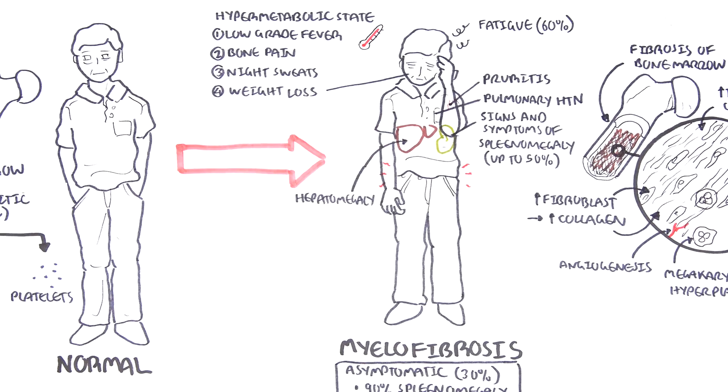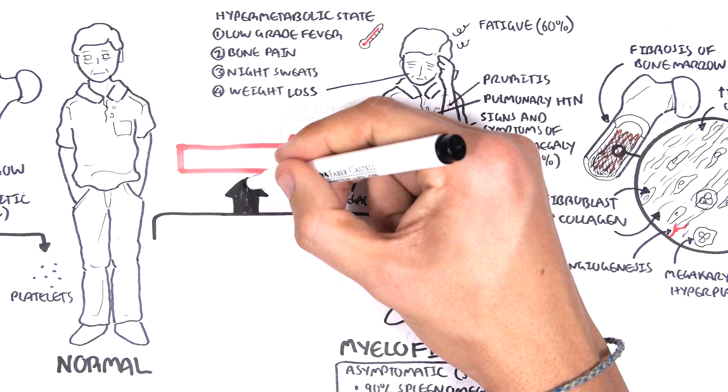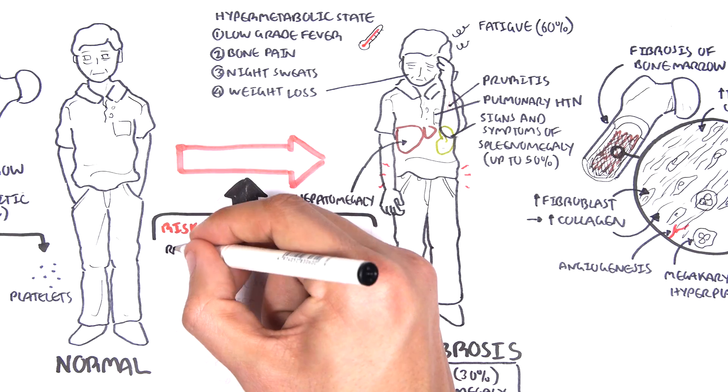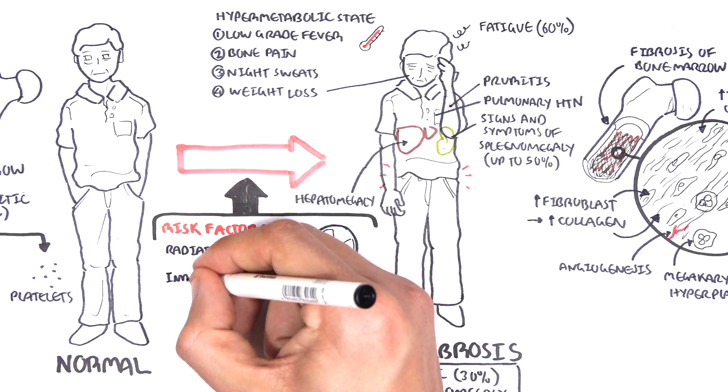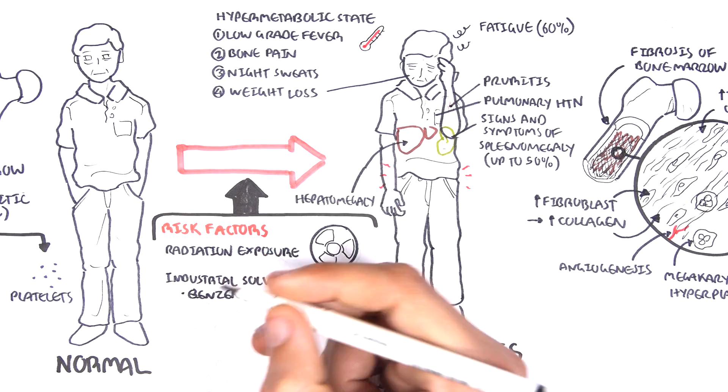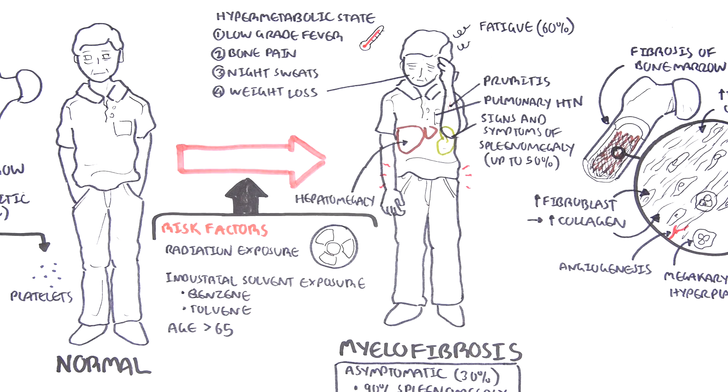The risk factors for primary myelofibrosis are radiation exposure, industrial solvent exposure, including benzenes and toluene. Also, age greater than 65 is a risk factor.